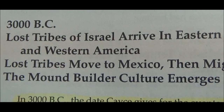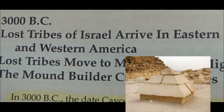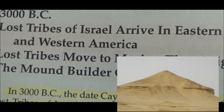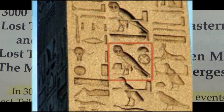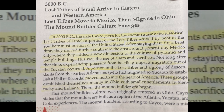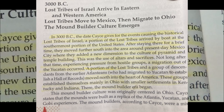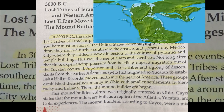The mound builder culture emerges because it's claimed that mound building started in Egypt — the pyramids — and then that custom and that tradition went all over the world. Ham was the one who started the mound building, and those who dwelt in that land and built these mounds were the Israelites and other nations. It says in 3000 BC, the date Casey gives, a portion of the lost tribes arrived by boat at the southernmost portion of the United States, because the earth was together at one time and did split.